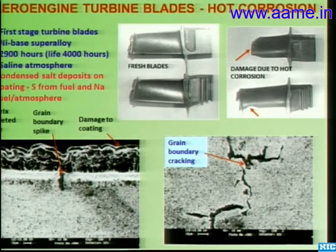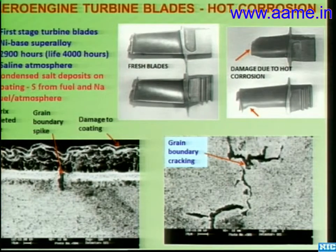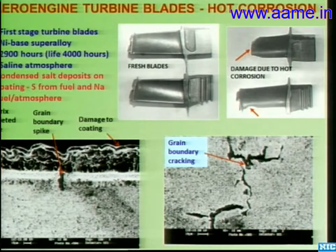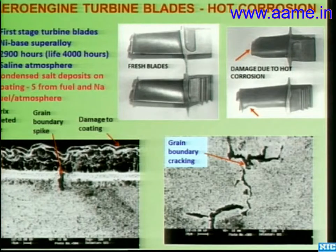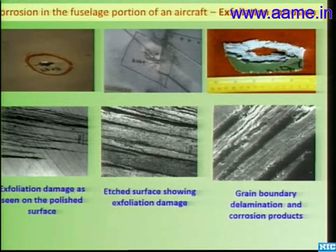Another blade failure occurred due to hot corrosion. A clearly visible gamma prime denuded region and grain boundary cracking were observed. Investigation revealed the fuel had higher sulphur content and the aircraft was operating in a saline environment. The combination of sulphur and sodium from the saline environment led to hot corrosion and failure. To avoid hot corrosion, fuel quality must be strictly controlled with respect to sulphur content.